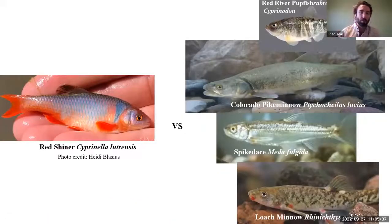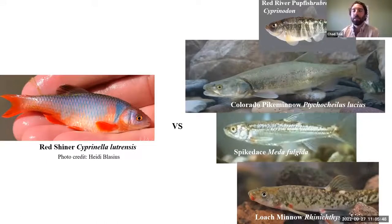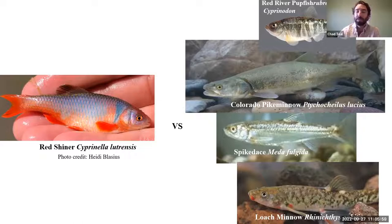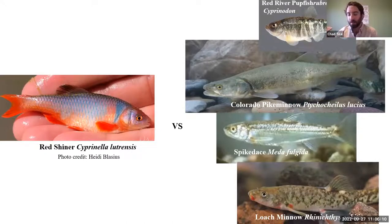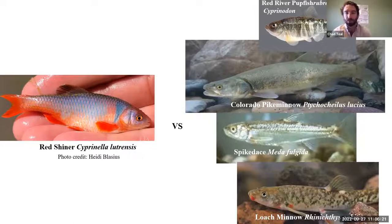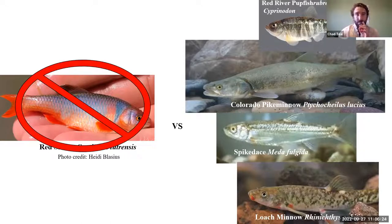Red Shiner — even though they're beautiful, and this picture of a male Red Shiner was taken by Heidi Blasius — they're a big problem in the desert Southwest for many species of high conservation concern. They've been implicated in the decline of many aquatic species. Once they become established, they can thrive in degraded habitats and have a very high thermal tolerance, making them particularly invasive in Arizona, especially with climate change. The question is: how can we effectively and selectively eradicate invasive populations of Red Shiner without impacting the species we're trying to protect?